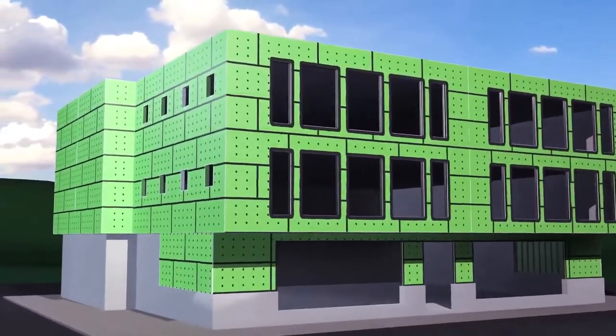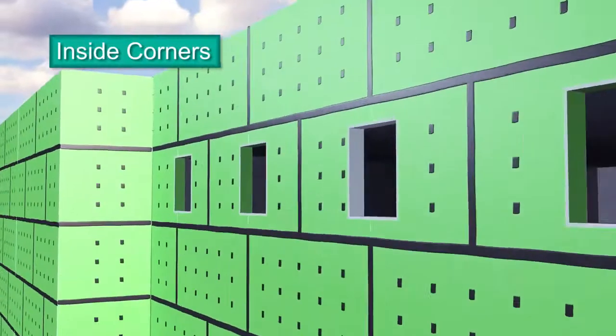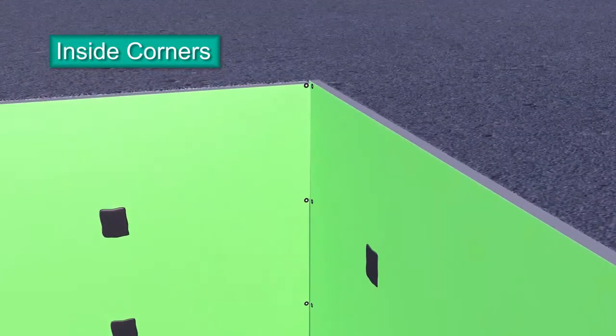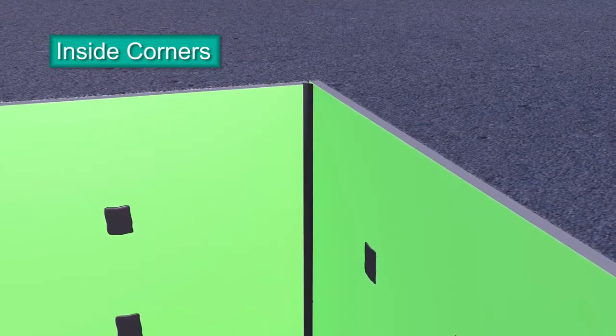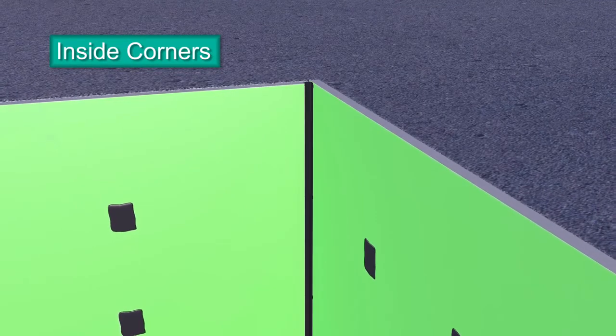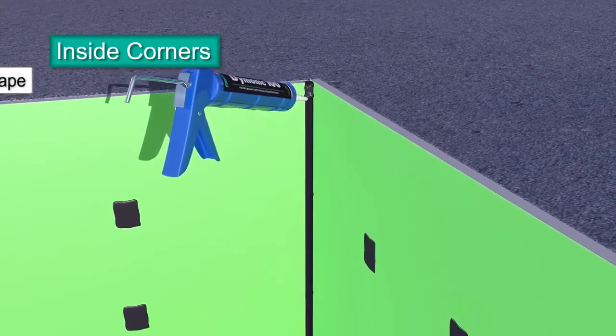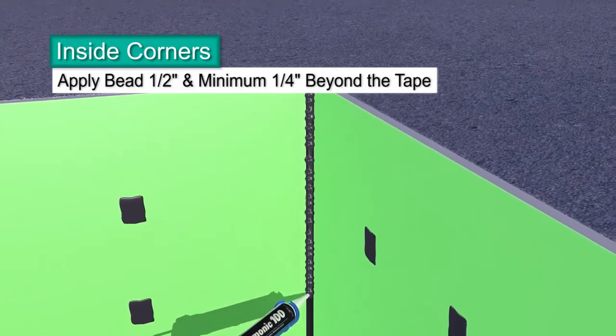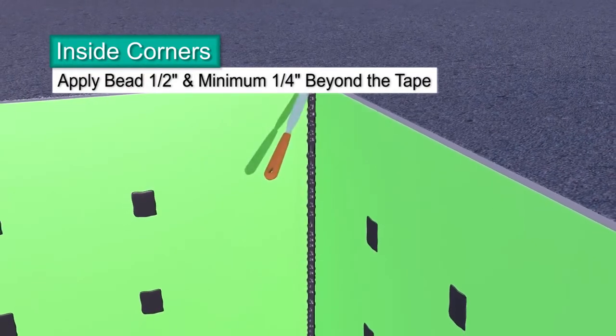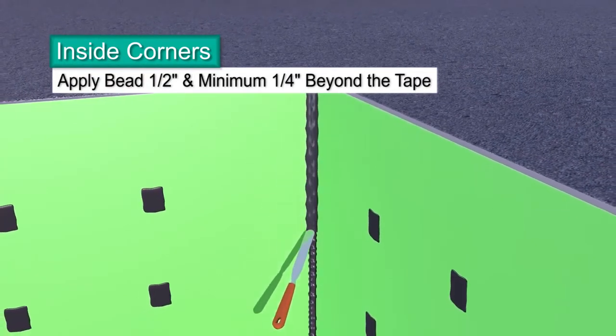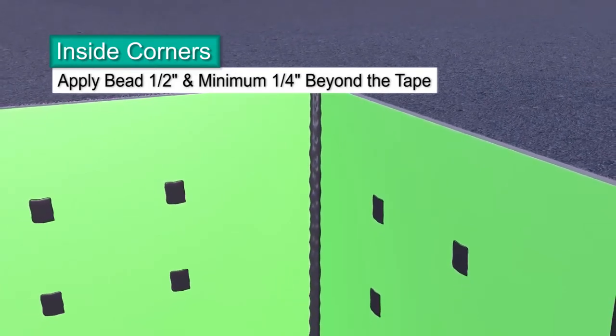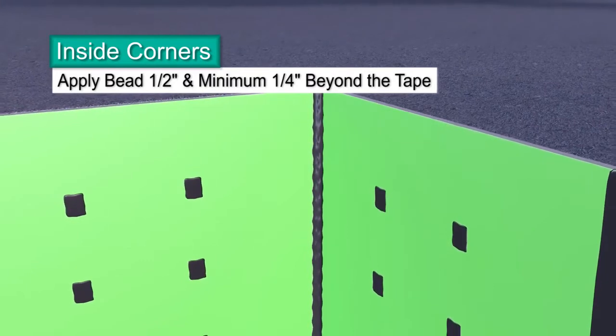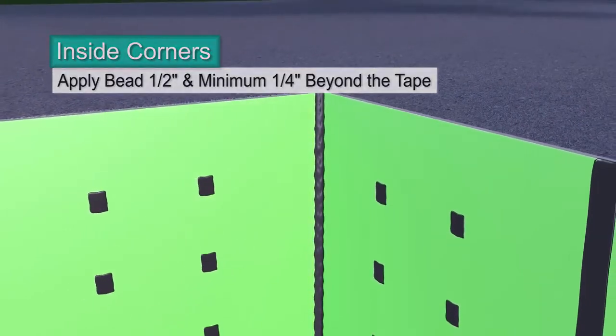Building designs are more complex than ever. Few have a simple rectangular shape. This means you have to detail inside corners. Start by centering bond breaker tape and applying directly to the inside corner. Press it into place. Apply a bead of Dimonic 100 sealant directly on top of the bond breaker tape. Tool the sealant smooth and extend at least 1/4 inch beyond the edges of the bond breaker tape. The tape breaks the bond of the sealant to avoid three-sided adhesion to accommodate for building movement.